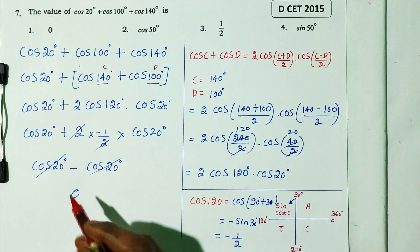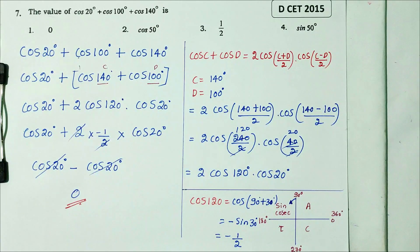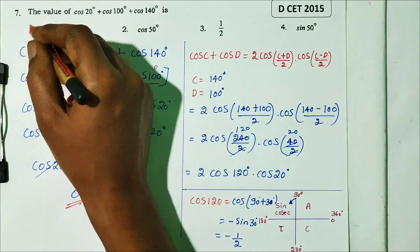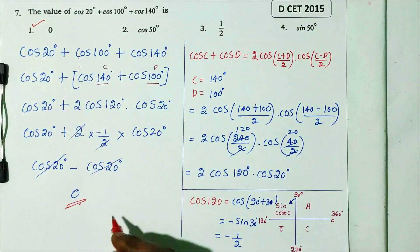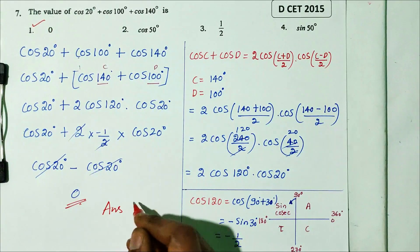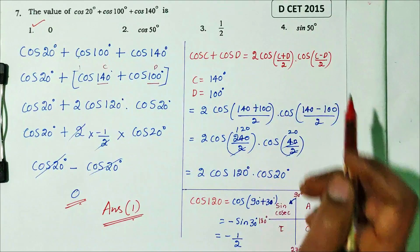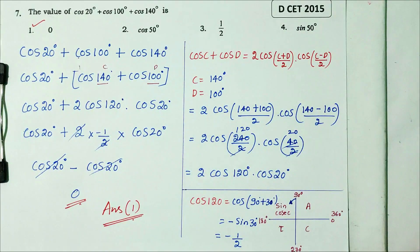So the answer is 0. The first option is the right answer. DCT 2015 question.